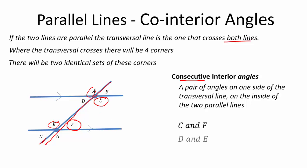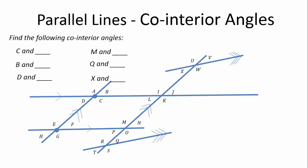Like I said, C and F and D and E. Let's go through some examples. Find the following co-interior angles. What will C be a co-interior angle with?